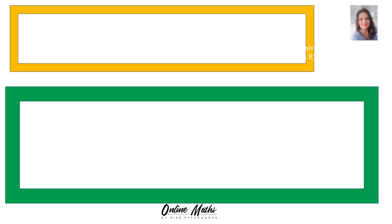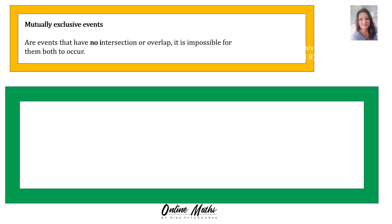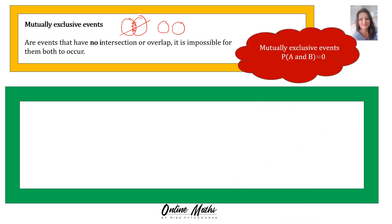Now I'm going to discuss some rules and formulas that you must remember. First of all, we get something called mutually exclusive events. They are events that have no intersection or overlap — it is impossible for them both to occur. So in a Venn diagram, there will be no intersection; it will just be two separate sets of information. The rule is: for mutually exclusive events, P(A and B) equals 0, meaning there is no intersection.